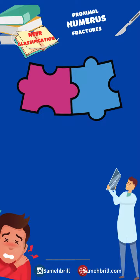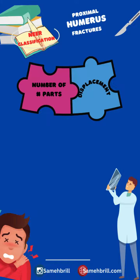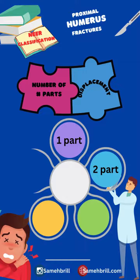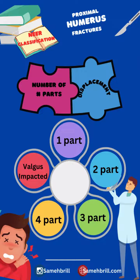The two main components of this classification are the number of fracture parts and the displacement. Proximal humeral fractures can be one, two, three, or four-part fractures. A fifth type was added by Neer in 2002, which is the valgus impacted four-part fracture.